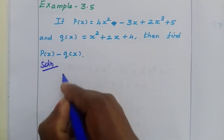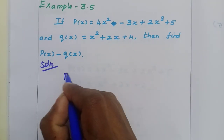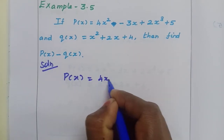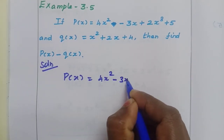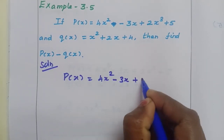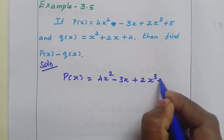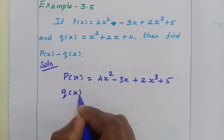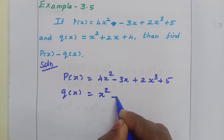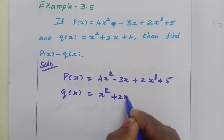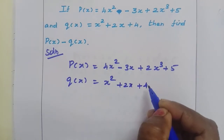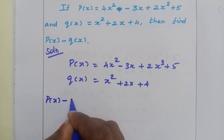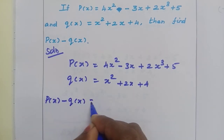First, write the given polynomials. So, p of x equals 4x squared minus 3x plus 2x cubed plus 5. q of x equals x squared plus 2x plus 4. Then find p of x minus q of x.